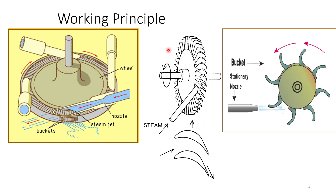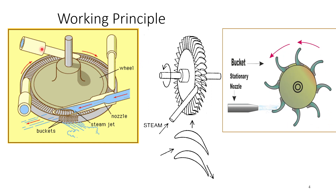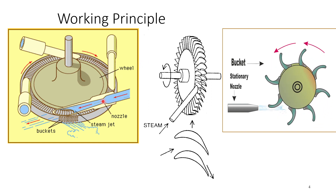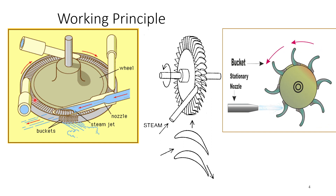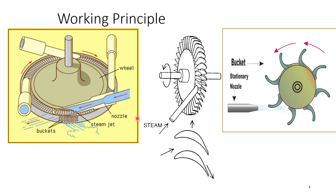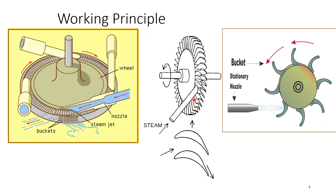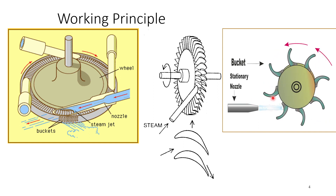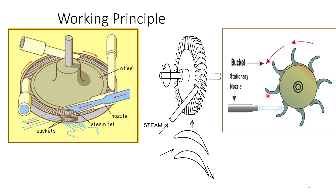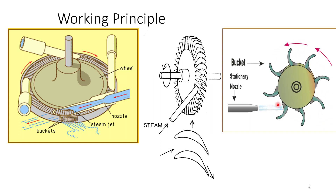Looking at the basic working principle of the steam turbine: on the left-hand side you can see the nozzles where the steam is coming in, the pressure of the steam gets reduced, and high-velocity steam passes through the circumference of the rotating wheel. In the central drawing you can see the nozzle, and on the right side you can see the rotor with blades fixed on it and how the steam hits the blades causing the rotor to rotate.